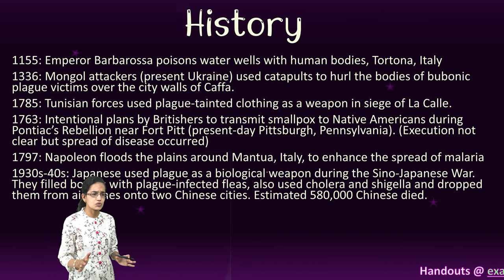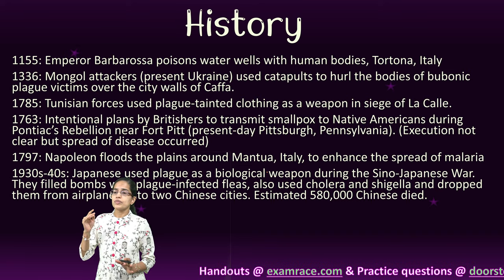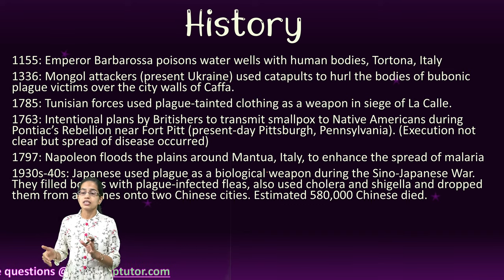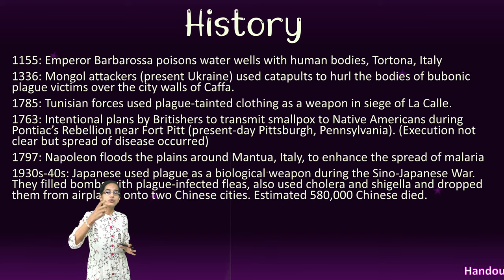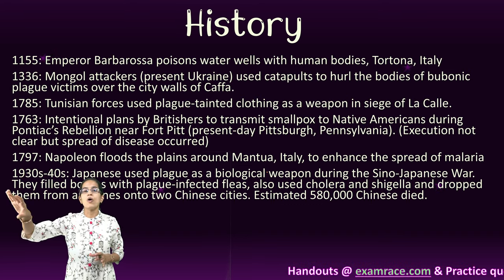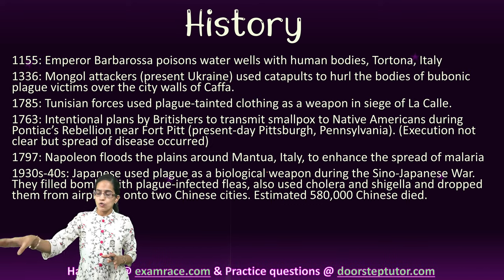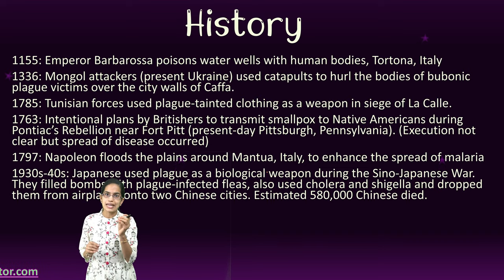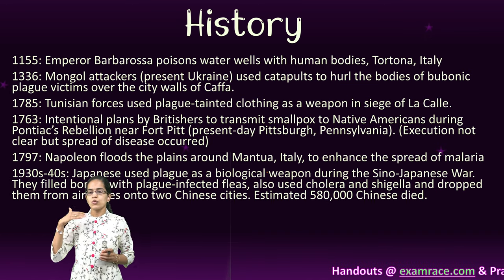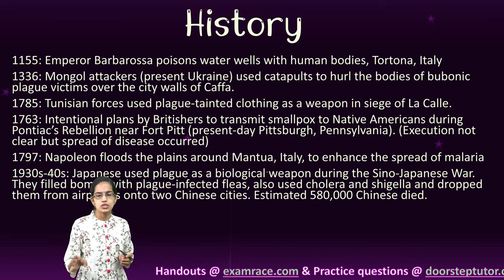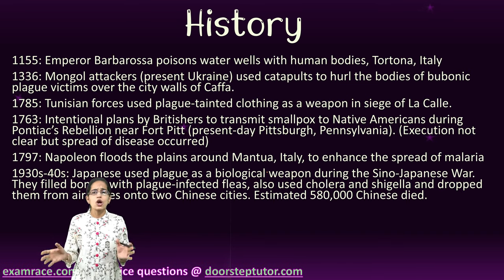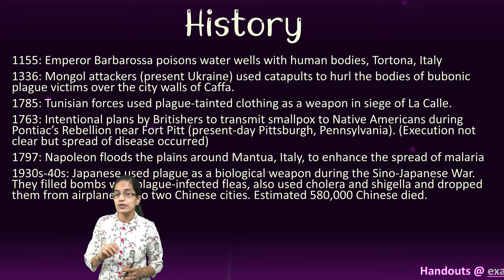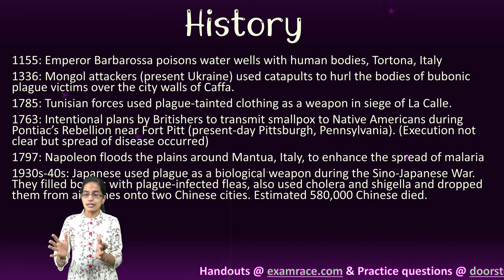If we focus on the past history, it has been very astonishing. In 1155, Emperor Barbarossa poisoned water wells with human bodies in Italy. In 1346, Mongol attackers from present-day Ukraine used catapults to hurl bodies of those who had died of bubonic plague over the city walls of Kaffa. Similarly, Tunisian forces used clothes tainted with plague as a weapon, and there were plans by the British to intentionally transmit smallpox to native Americans. The native people were badly affected by smallpox, creating one of the terror events in the regions of America.